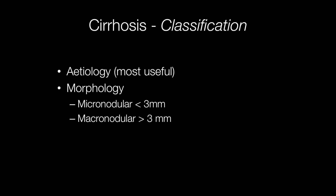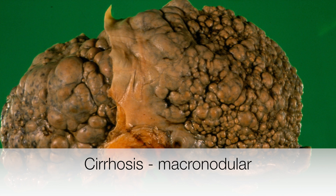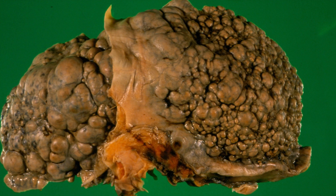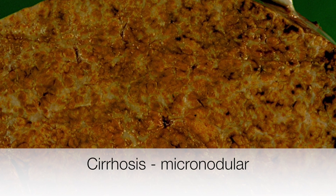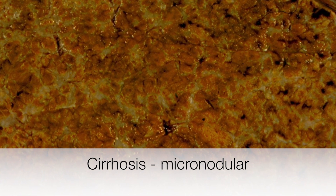Cirrhosis may be classified according to either etiology or morphology. Etiology is the most useful way of classifying it. If classified according to morphology, there are two types: micronodular cirrhosis, where the nodules are less than 3 mm in diameter, and macronodular cirrhosis, where the nodules are greater than 3 mm in diameter. In this cirrhotic liver the nodules are clearly greater than 3 mm in diameter — this is macronodular cirrhosis. In this slice of liver the nodules are so small they are quite difficult to see; this is an example of micronodular cirrhosis, with nodules less than 3 mm in diameter.